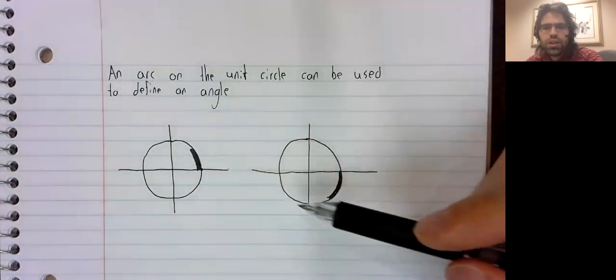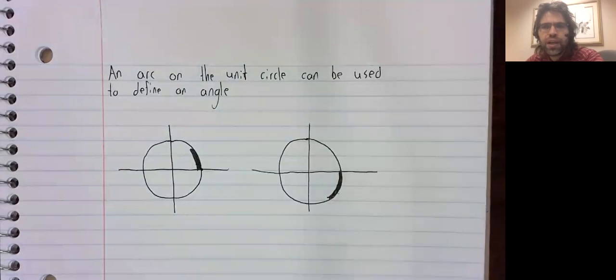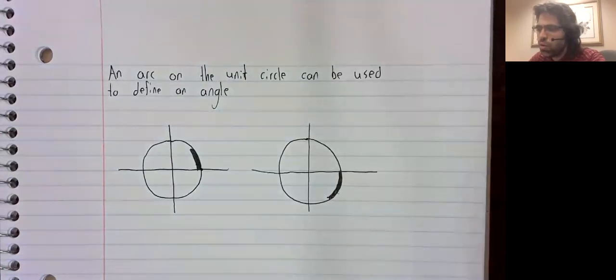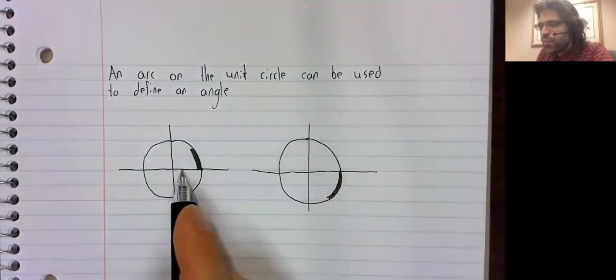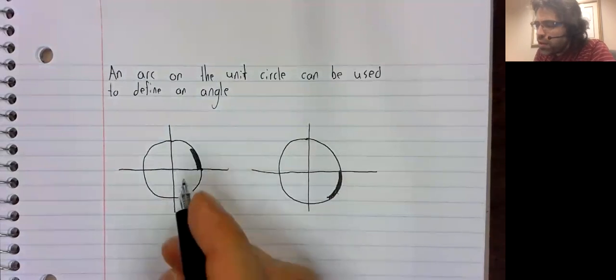Both of these arcs can be used to create an angle. The x-axis will form one ray.